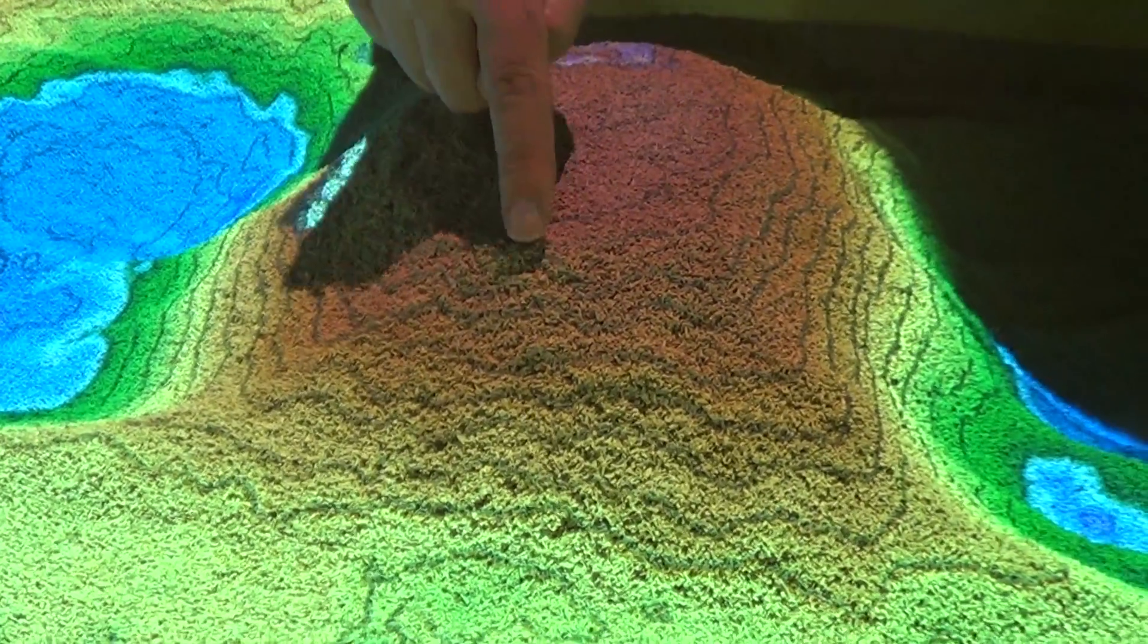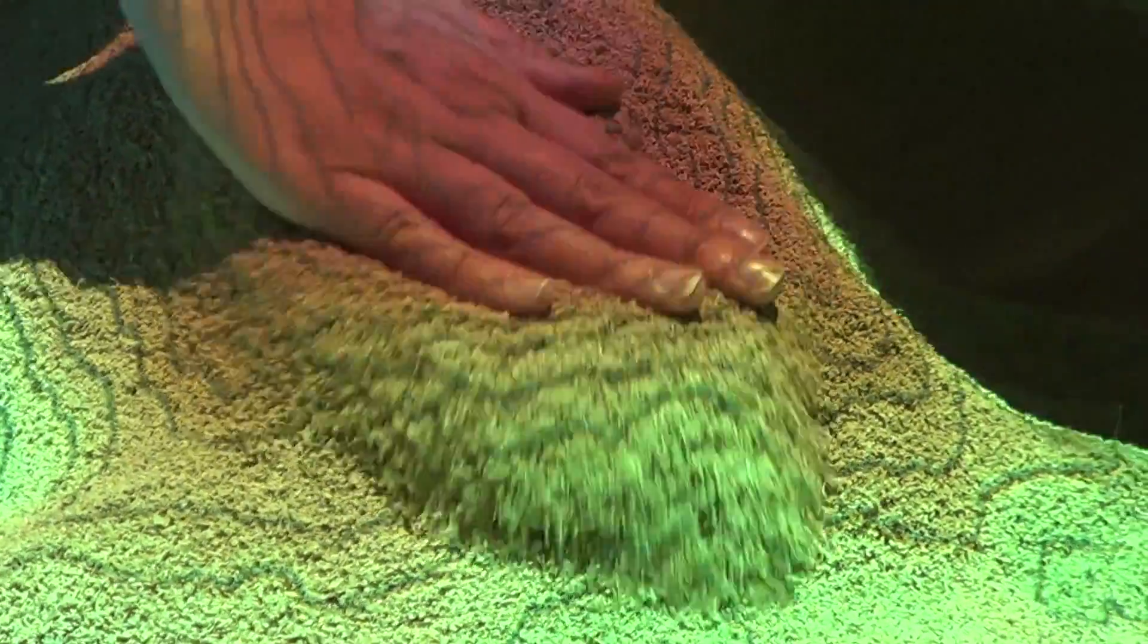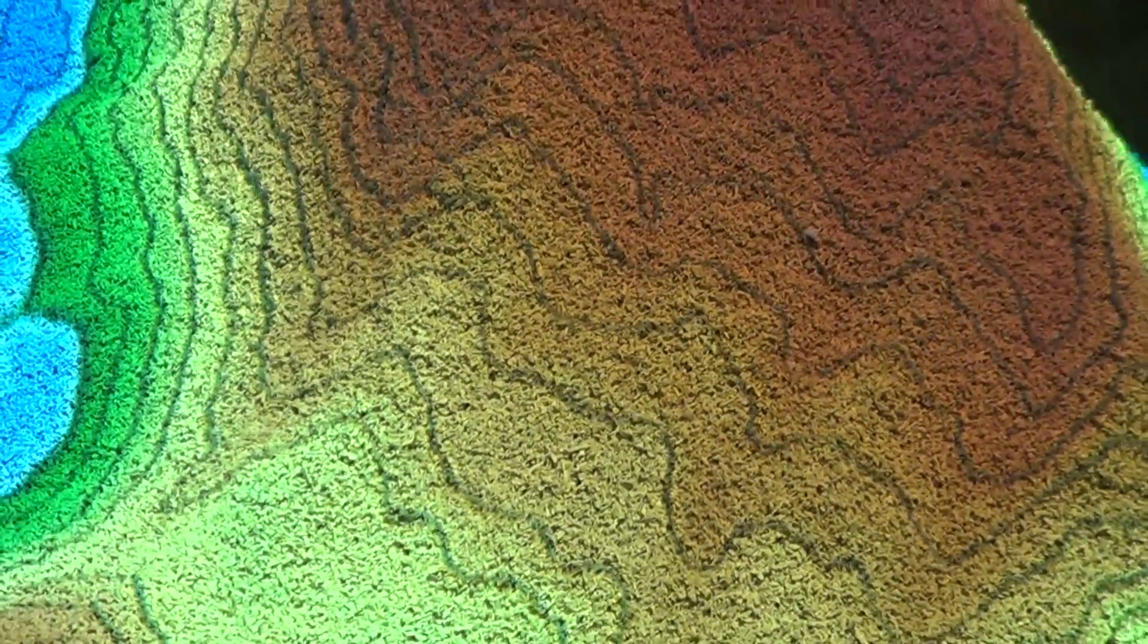Now when these contour lines are closer together, that indicates steeper. So let's make this side less steep. Look what happens to the contour lines. They spread out more and you can see the change in color variation more.